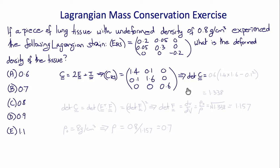That gives us that the determinant of C is 0.6 times the determinant of this block, which is 1.4 times 1.6 minus 0.1 squared, which is 1.338.